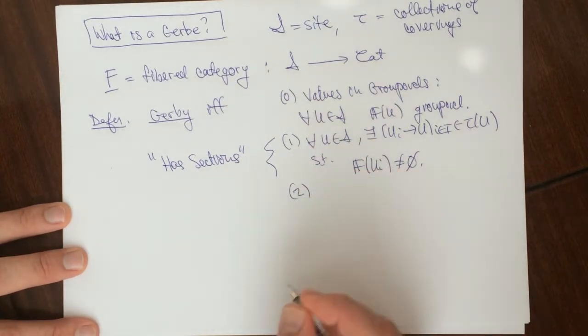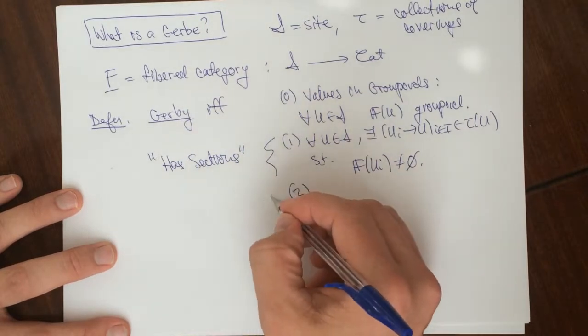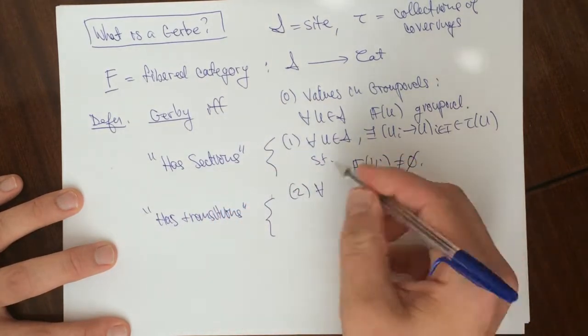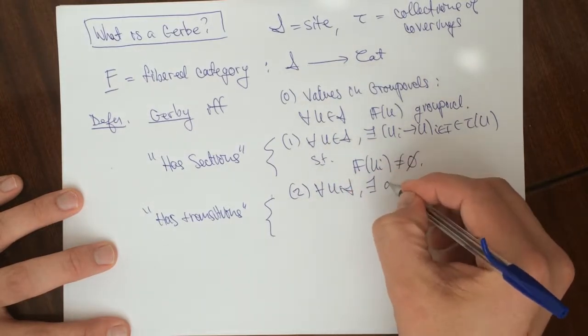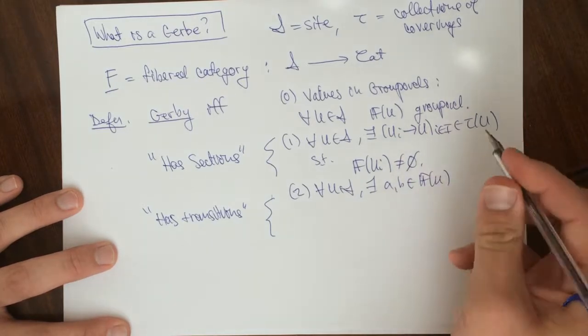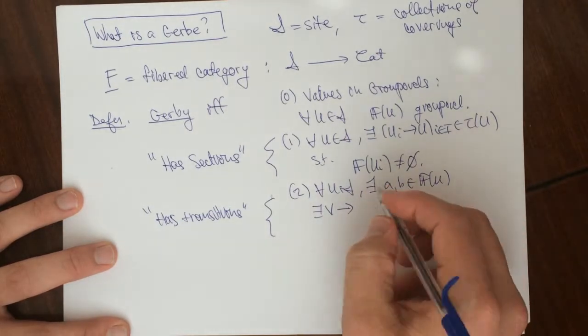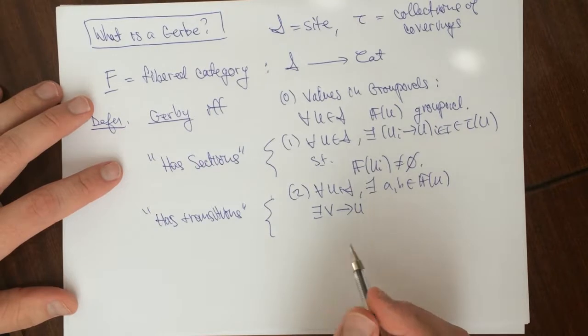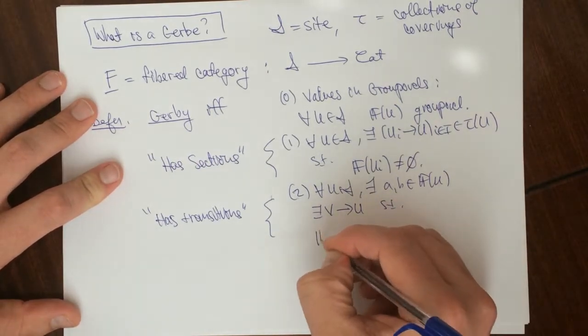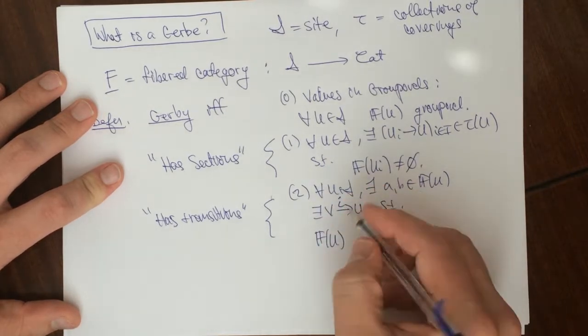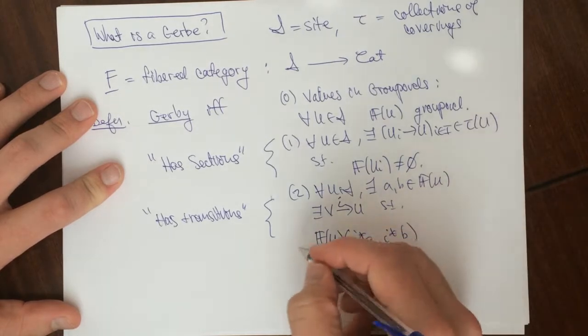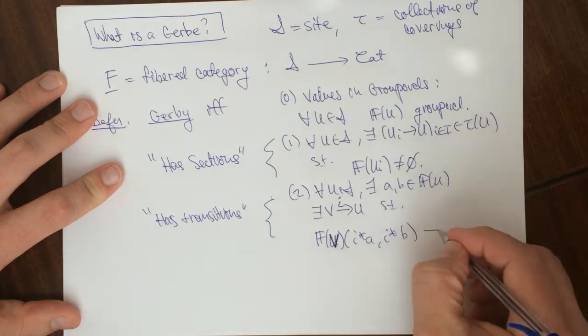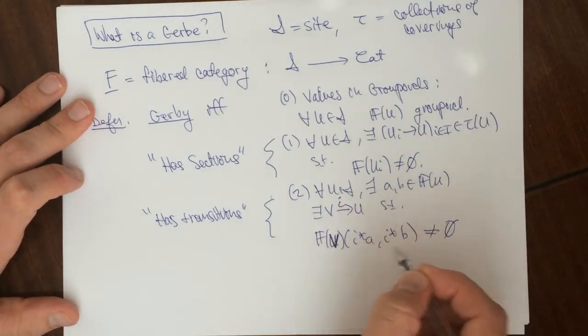And then two is that it has transitions. So this would be has transitions. Okay, and this says that for all U in S, and all A, B in F of U, so there exists V to U. Okay, so there exists like an inclusion, or like if the open sets on topological space, there'd be like a refinement, right, such that, let me write it, F of U. Okay, this is going to be when we pull back A and we pull back B. So this is Hom in the category F of V. This is Hom in the category F of V is not empty. So that there exists a transition between this one and this one. So these ones are going to be isomorphic.